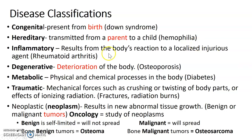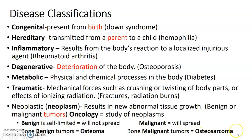Benign tumors are self-limited and will not spread. Bone benign tumors are called osteoma. Malignant tumors will spread. Bone malignant tumors are called osteosarcoma. Make yourself some flashcards for those terms.